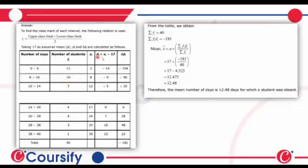Then 10 to 14, number of students FI is 7. XI is 12. DI equals XI minus 17, that is minus 5. We get minus 35.